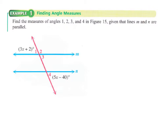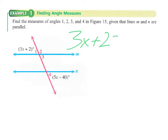We use that information to find the measures of angles 1, 2, 3, and 4 in this figure. Angles 2 and 3 will be supplementary; angles 1 and 3 will be congruent; and angle 4 is acute, so angles 1, 3, and 4 will all be equal. Angles 4 and 1 are alternate exterior angles — both acute — so we set those two expressions equal to each other: 3x + 2 = 5x − 40.